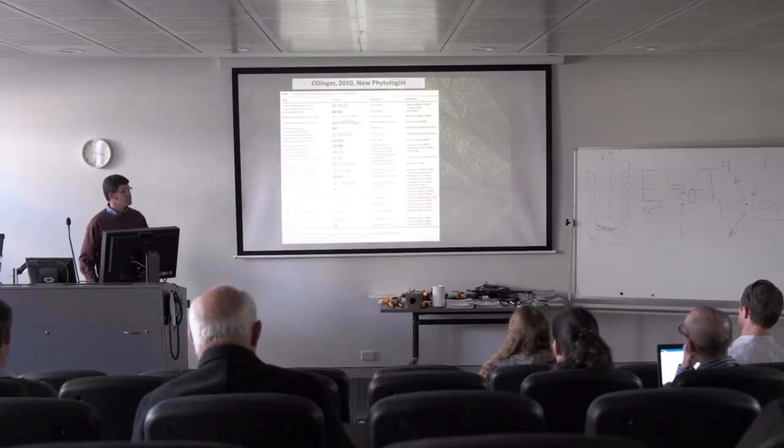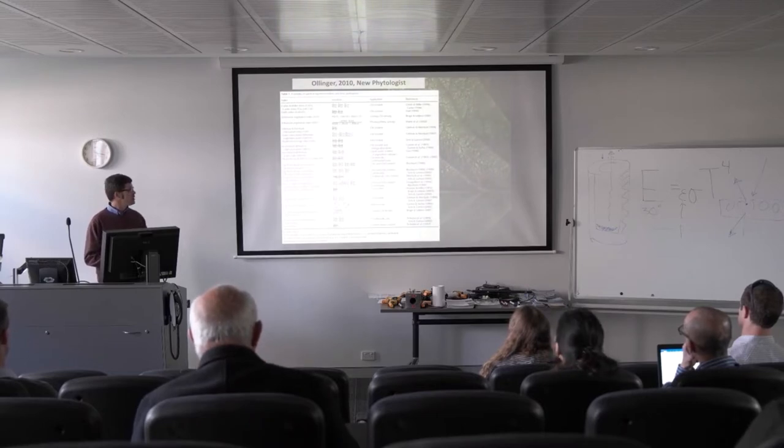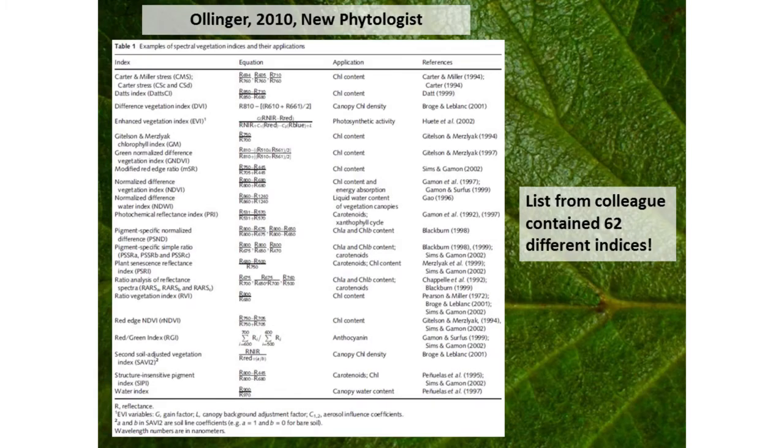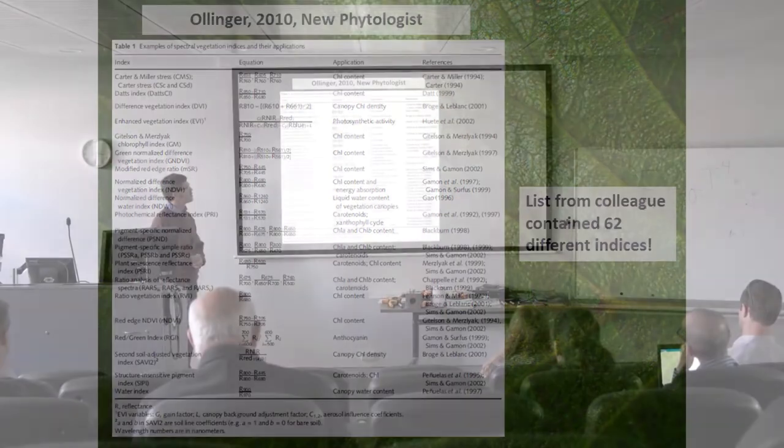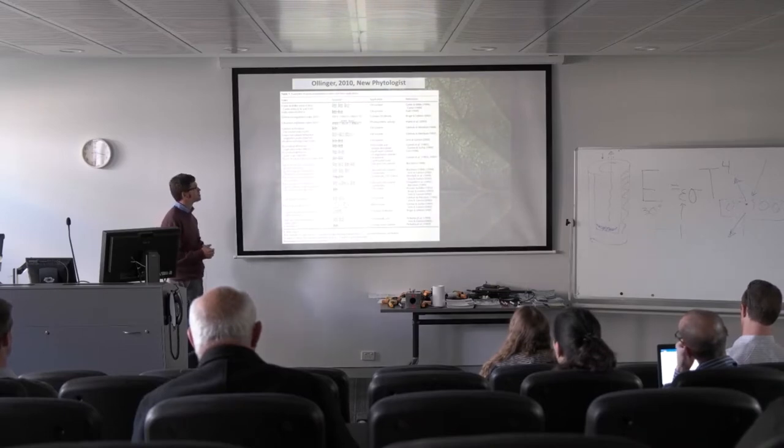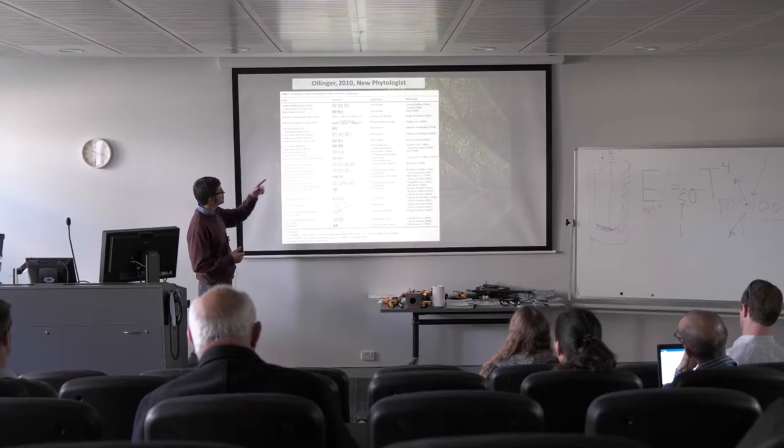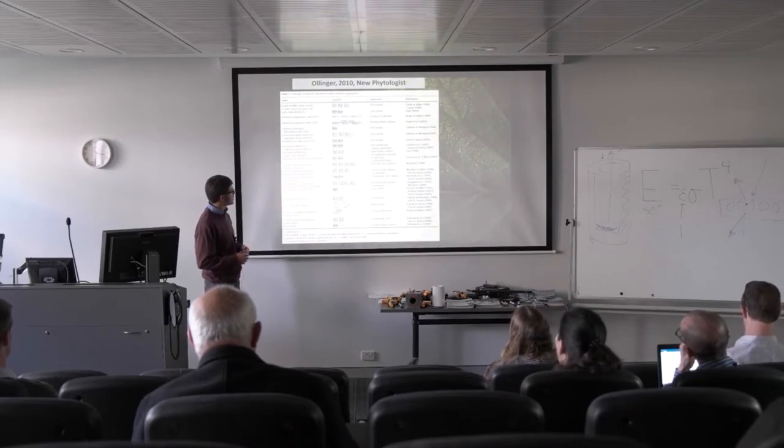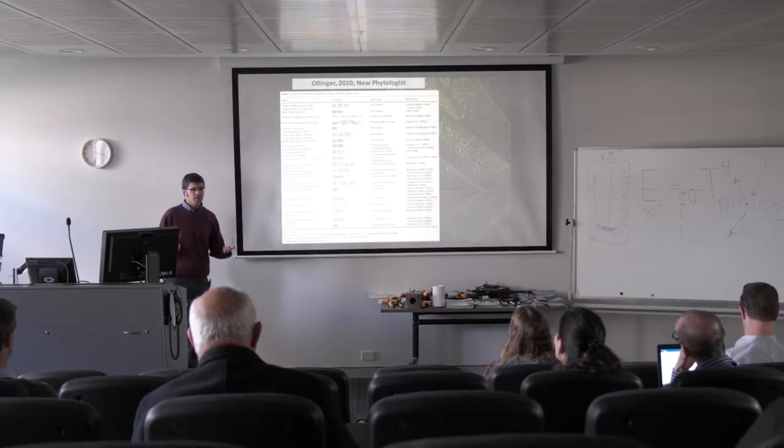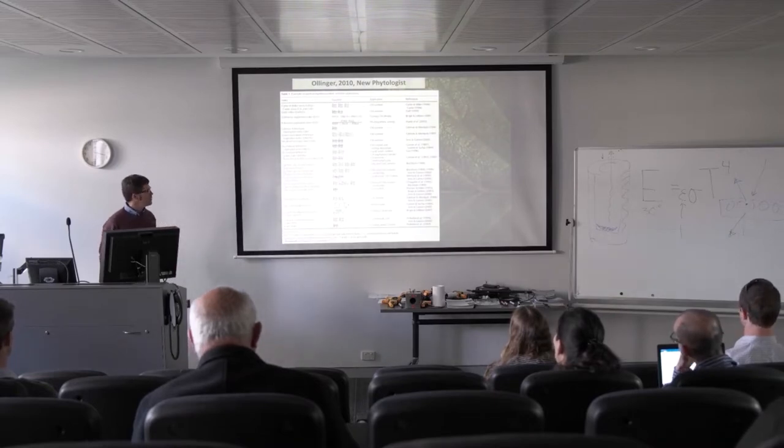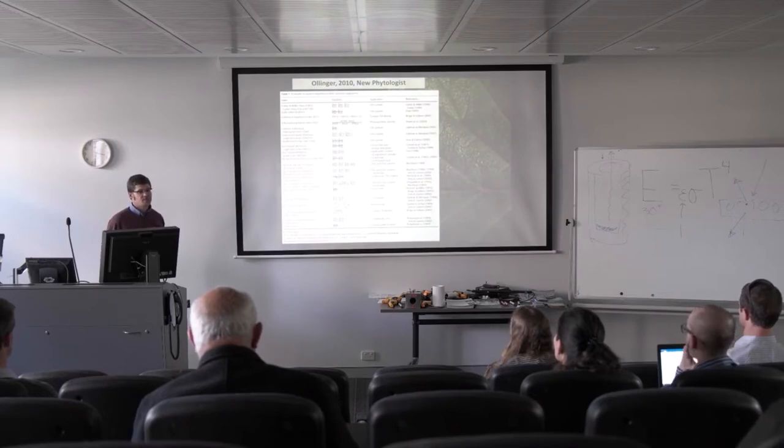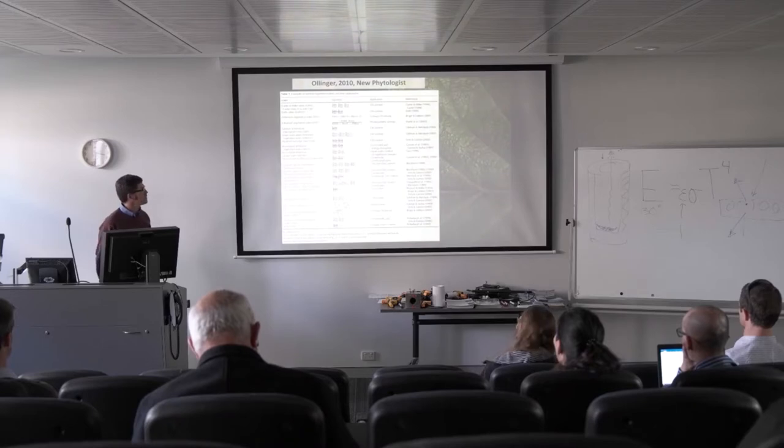There turns out there are a whole host of fairly simple reflectance indices that have been published in the literature. Here's a relatively recent review paper. This is actually a table from that paper where 20 different relatively simple reflectance indices are shown here that are all attempting to quantify different things. We've got chlorophyll content, photosynthetic activity, liquid water content, carotenoids and xanthophyll cycle, anthocyanin, canopy water content. There's lots of different plant properties that people have attempted to estimate or learn about using reflectance indices.